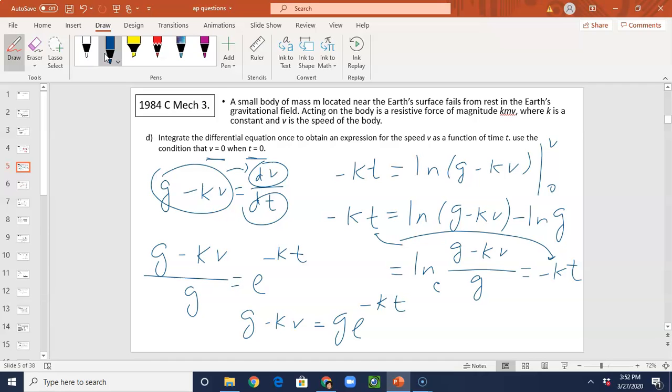You can add KV, whatever you have to do. You should have this: V equals to G over K times 1 minus E negative KT. And that should be your solution. So what I did is I add K times V on both sides and subtracted G E to the power of negative KT on both sides. And then I factoring the G out, then divide both sides by K. So this is the answer.